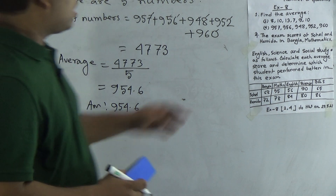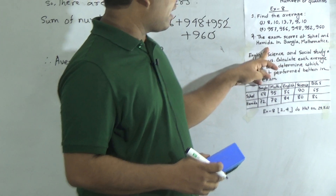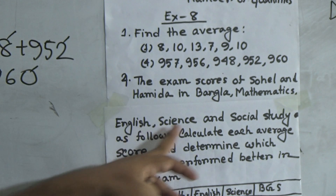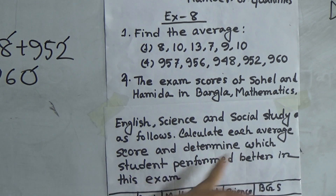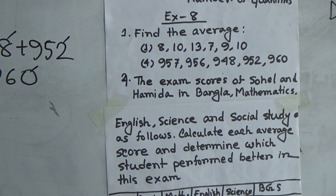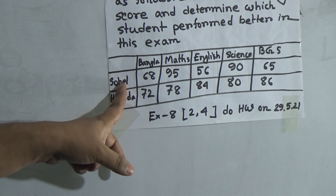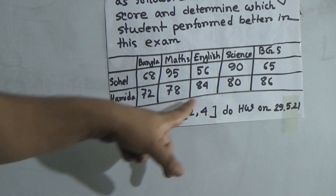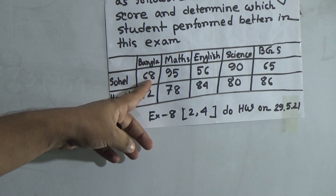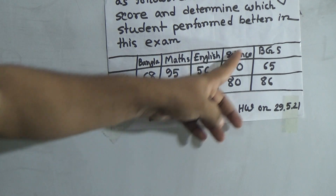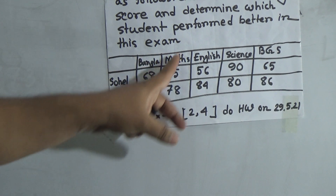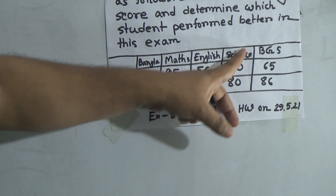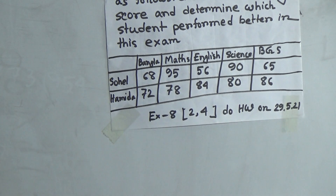Next, we shall solve question number 4. The exam scores of Shohel and Hamida in Bangla, Mathematics, English, Science and Social Study are as follows. Calculate each average score and determine which student performed better in this exam. Shohel's marks: Bangla 68, Mathematics 95, English 56, Science 90, BGS 65. Hamida's marks: Bangla 72, Mathematics 78, English 84, Science 80, BGS 86.